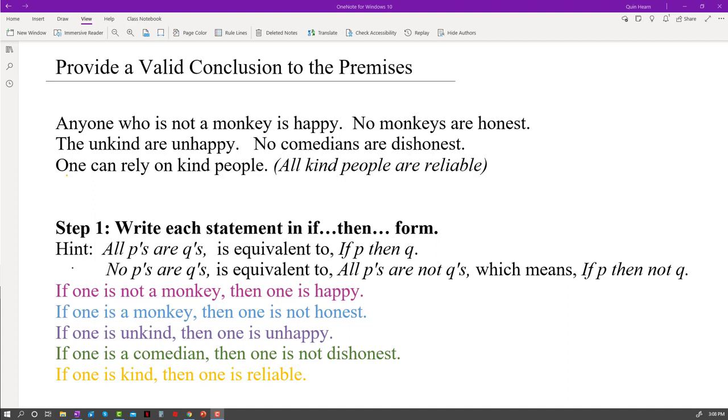So far what we've done is first write each of those statements, each of those premises, in if-then form. So we changed them to be if one is not a monkey, then one is happy, if one is a monkey, then one is not honest, if one is unkind, then one is unhappy, if one is a comedian, then one is not dishonest, and if one is kind, then one is reliable.